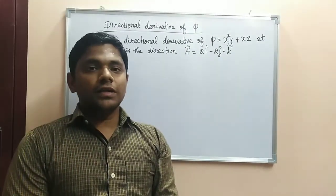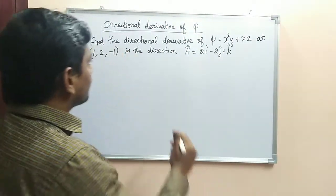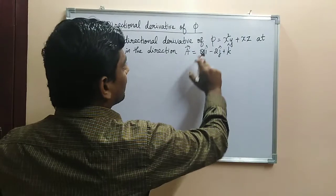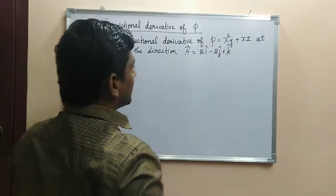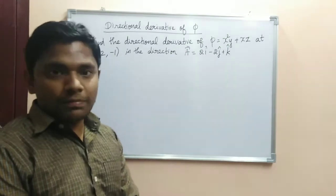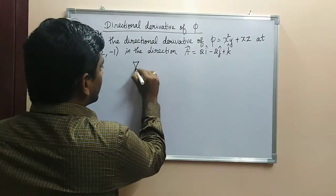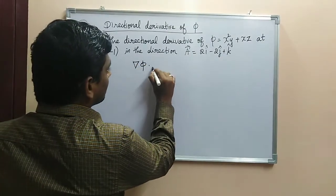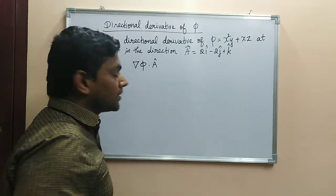So how to find out the directional derivative? Here we have to find out the directional derivative of Phi in the direction of a vector. Actually, in order to find the directional derivative, we have to apply the formula: ∇Φ · Â.